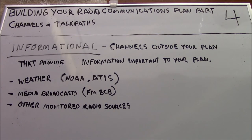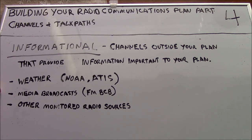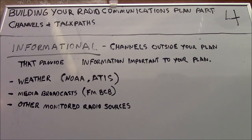Informational channels are channels outside of your plan that provide information important to your plan, such as NOAA weather forecasts. Always put the local weather channel in one of the positions in your radio template. If you have an aviation radio or scanner, you can listen to the Automatic Terminal Information Service (ATIS) for airport-relevant information. Most broadband amateur radio equipment now covers the FM broadcast band for media information, plus other monitored radio sources relevant to your current operation.